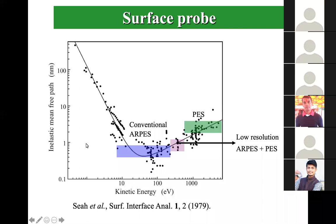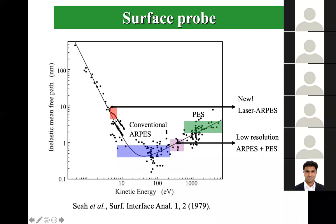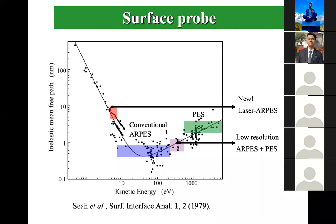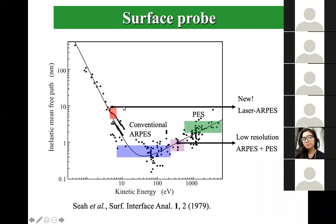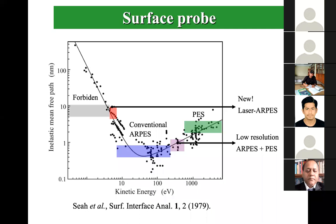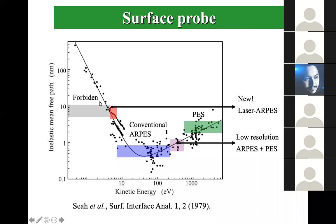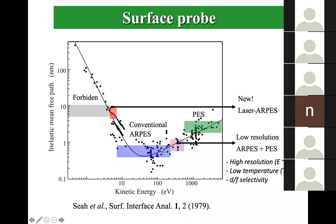The good news is that at around 6-7 eV photon energy, the bulk sensitivity is much higher - almost 10 times more - so you can go really deep into the sample and get bulk-sensitive measurements. People now use nonlinear crystals like BBO or KBBF with Ti:sapphire lasers to reach this lower photon energy range. There is a forbidden region where your work function is larger than the incident energy so you can't knock out electrons. This higher bulk sensitivity region enables high-resolution, low-temperature measurements with better orbital selectivity.